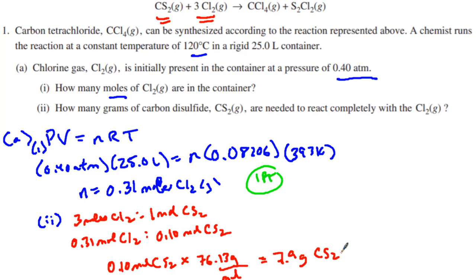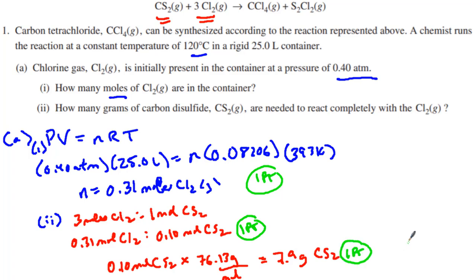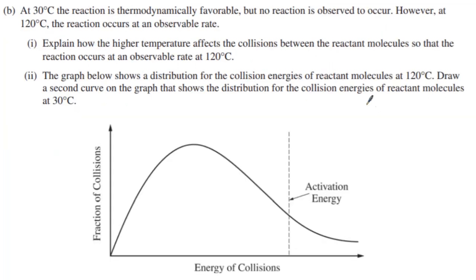That is worth one point for finding the ratio and the new number of moles — remember, that could be implicit, meaning it could be worked into your problem — and one point for the final mass. So two points for letter A2.